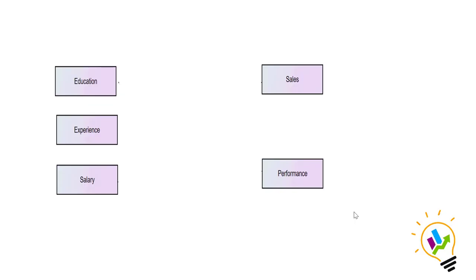This is a sales performance example and in this example we have five scale measurement data variables. The education variable contains number of years of education the employee has. The experience variable contains number of months of experience the employee has in the organization. The salary variable contains monthly salary, the sales variable contains sales per month, and the fifth one is performance variable which contains marks scored by the employee in the marketing exam.